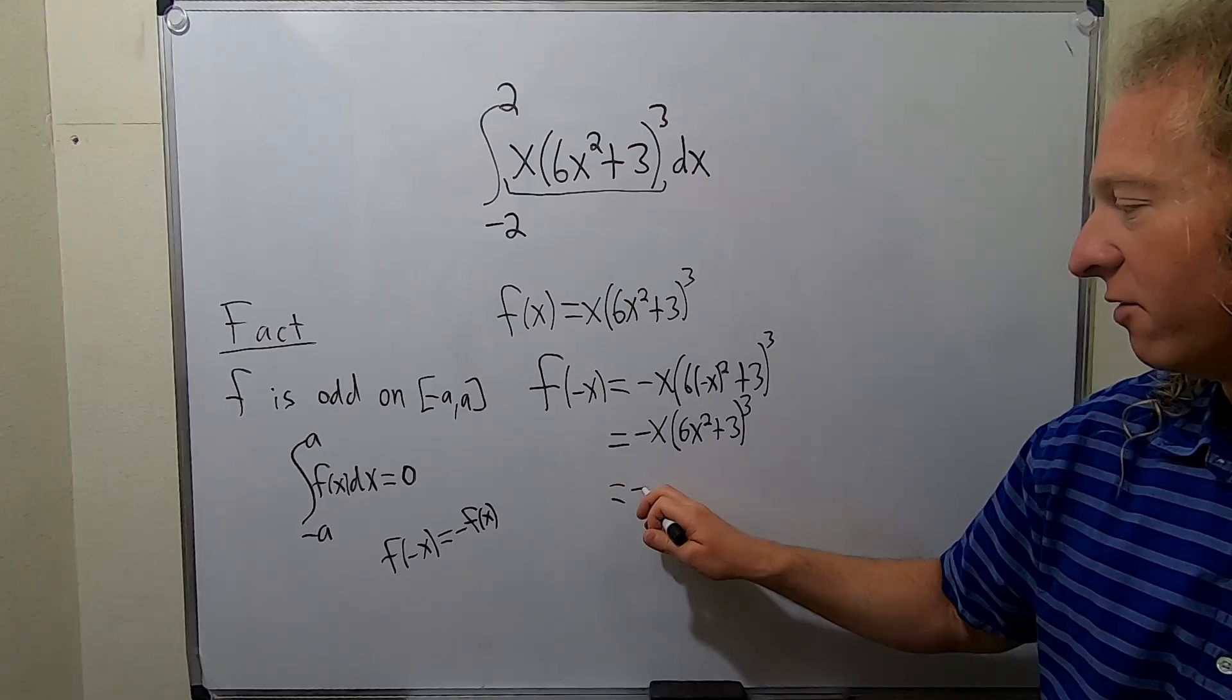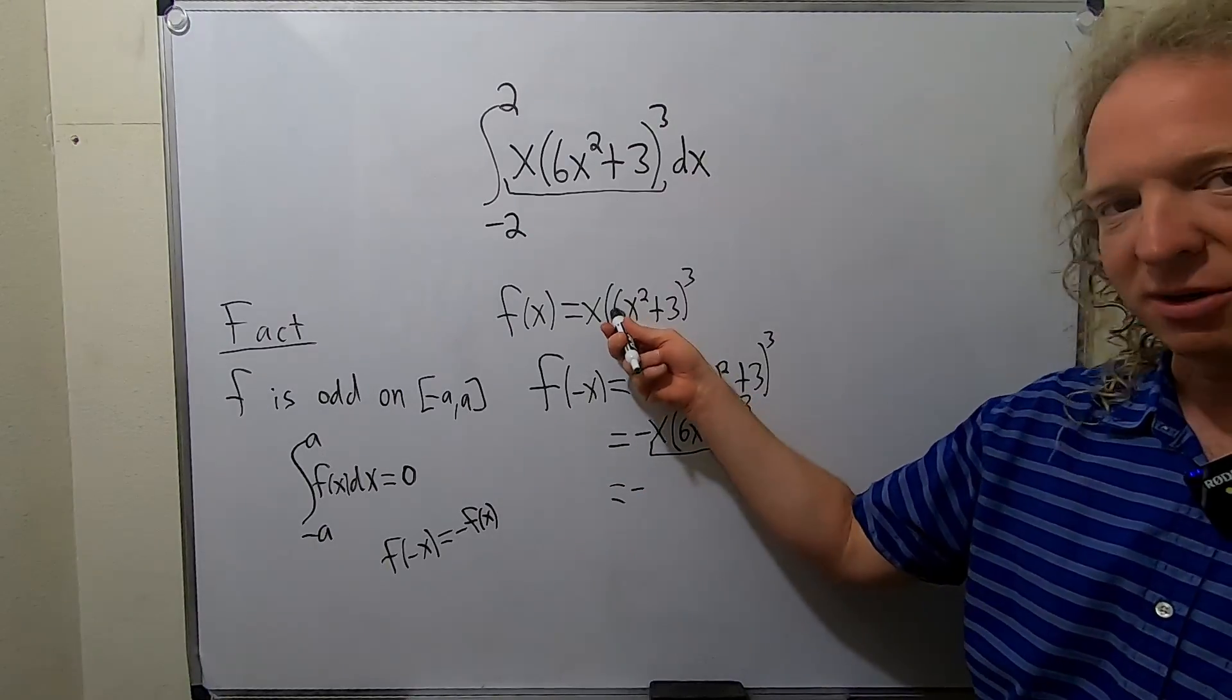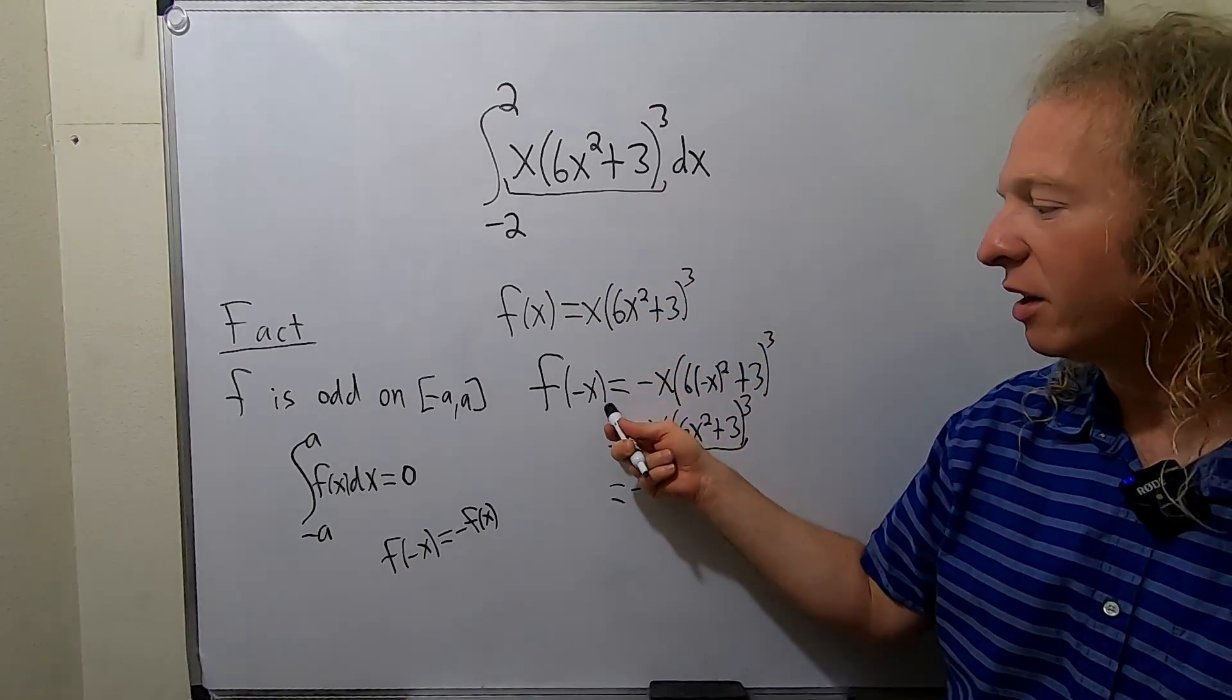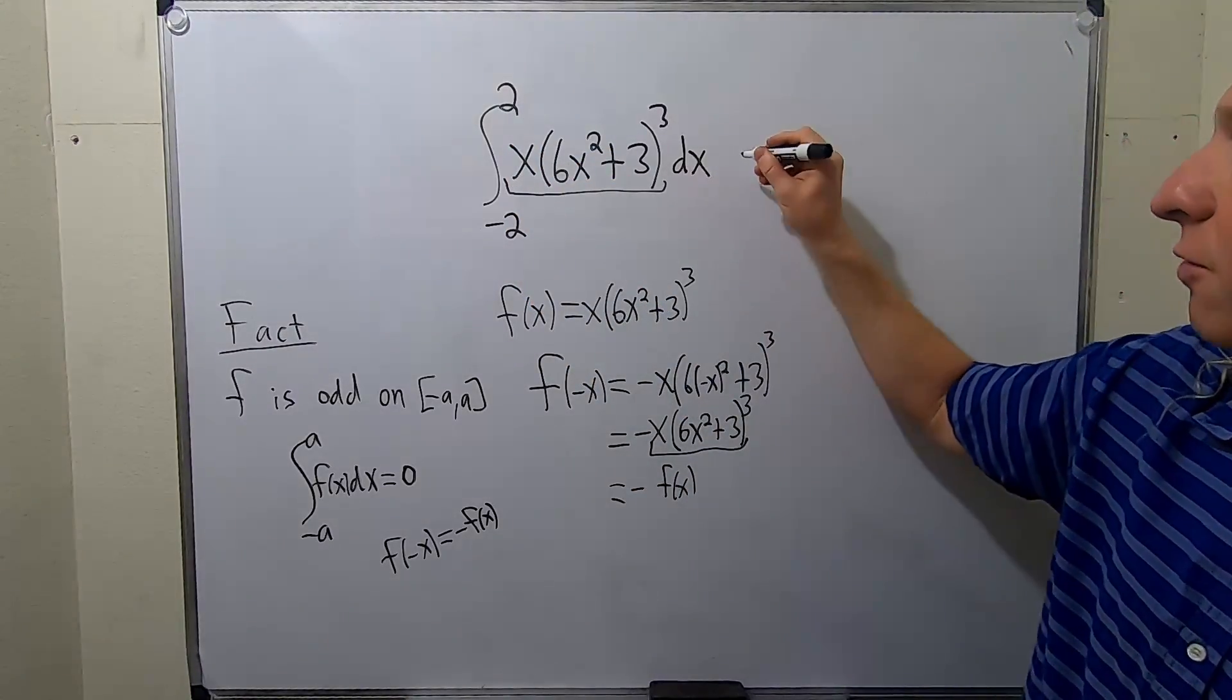And then this is negative, and what's all of this? This is what we started with. So we proved it. We proved that this function is odd. We're going from negative 2 to 2, therefore the answer is 0.